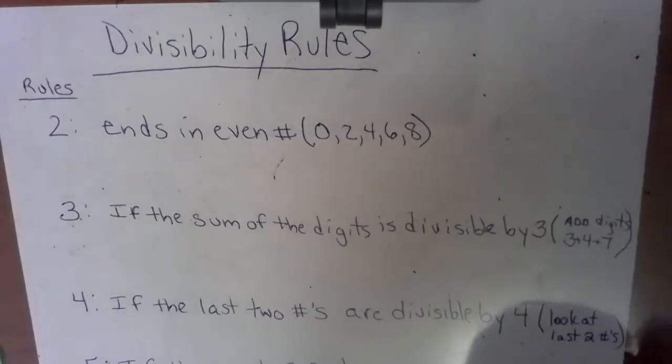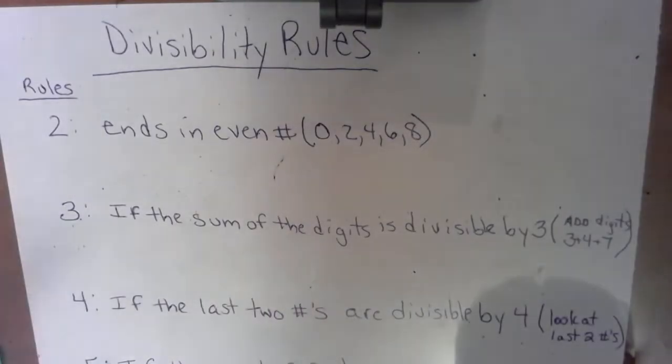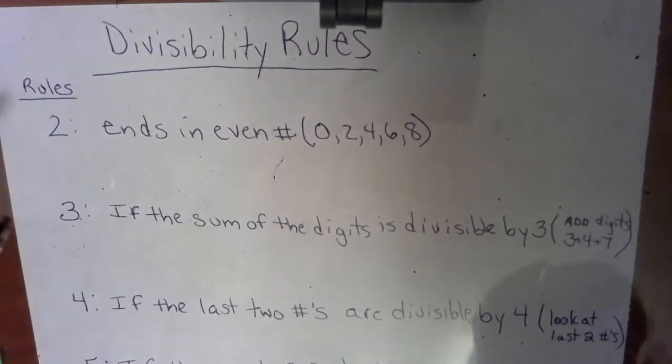Divisibility means can a number go into another number evenly with no leftovers, no remainders, no annexing of zero, nothing. It has to go in nicely. There's going to be seven rules that I'm going to give you, so I'm going to be moving the screen in just a little bit.